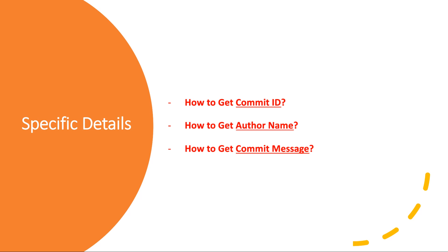How can we do that? I don't want to see all the details that we generally get using git log. I want to get only the commit ID, or I want to get the author name who performed the latest commit, or I want to know what was the commit message. How can we get such specific details from git commit history? Before moving ahead, let's understand why we need such details.